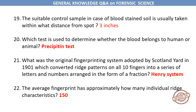The suitable control sample in case of blood-stained soil is usually taken within what distance from the spot? Three inches. Which test is used to determine whether the blood belongs to human or animal? Precipitin test. The original fingerprinting system adopted by Scotland Yard in 1901, which converted ridge patterns on all ten fingers into a series of letters and numbers arranged in the form of a fraction, is the Henry system. The average fingerprint has approximately 150 individual ridge characteristics.